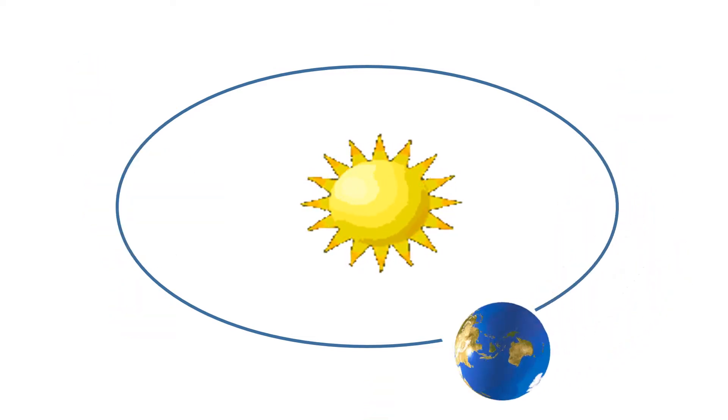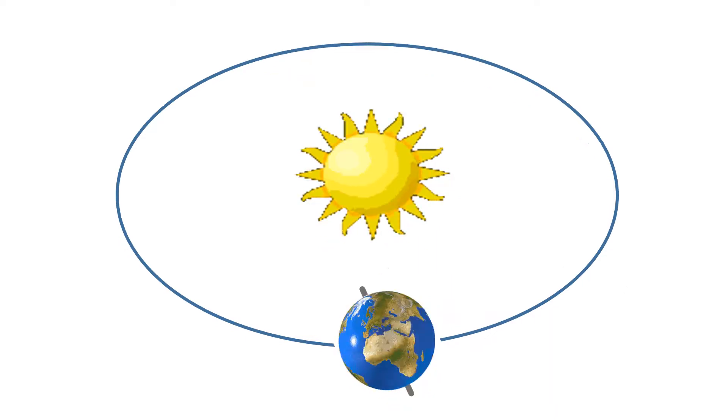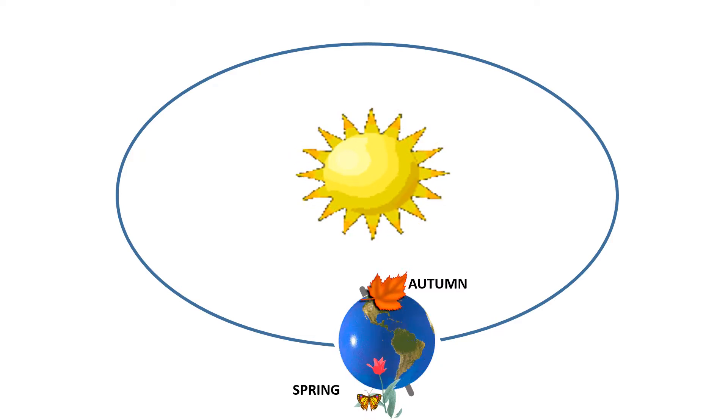When the Earth is here Sun shines equally on both the northern and southern hemisphere. The length of day and night are the same. It is autumn in northern hemisphere and spring in southern hemisphere.